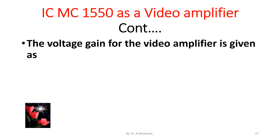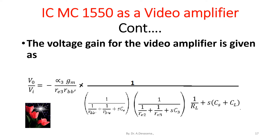The voltage gain for the video amplifier is given as: V0/Vi = −α3·Gm / (R_E3 · R_BB') multiplied by three parallel impedance components: 1/(1/R_BB' + 1/R_B'E + s·C_E), times 1/(1/R_B'E3 + s·C_3), times 1/(1/R_L + s·(C_S + C_L)). This is the voltage gain obtained from the small signal analysis of the equivalent circuit of the video amplifier MC-1550.